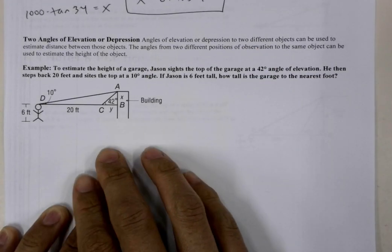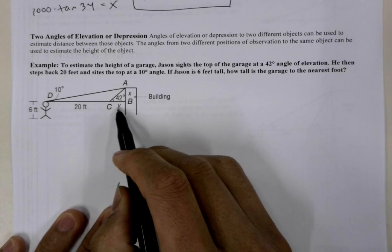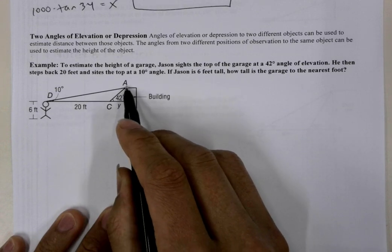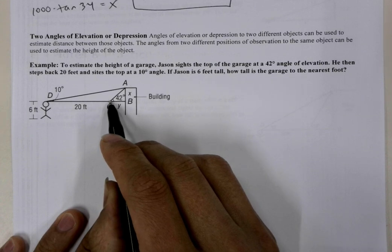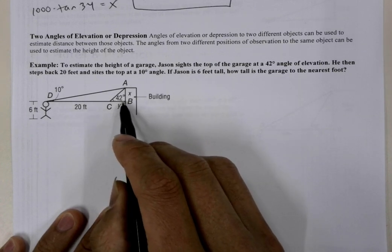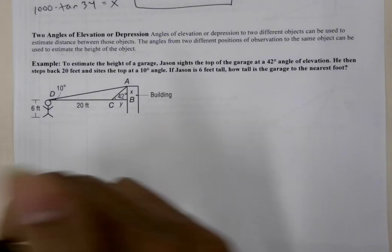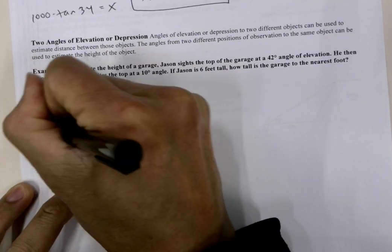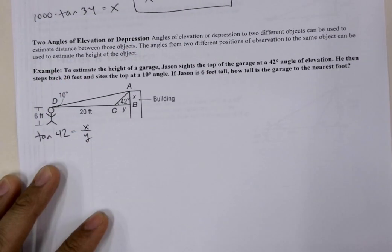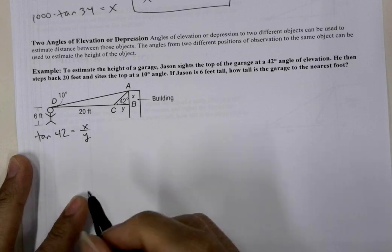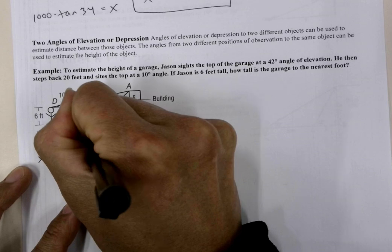To solve this, we look at the small triangle. Using angle C, we have opposite and adjacent, so we use tangent. Tangent of 42 equals X over Y. Solving for X by multiplying both sides by Y gives us X equals Y times tangent of 42.